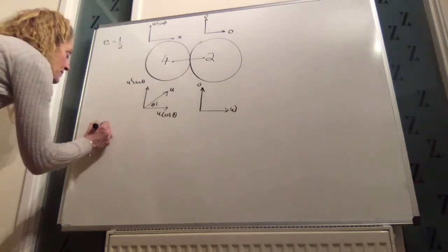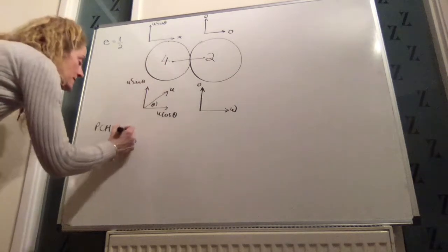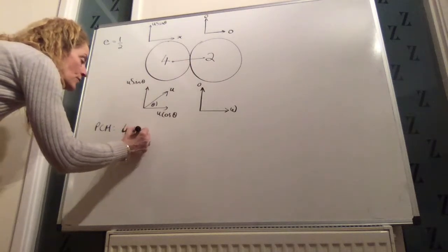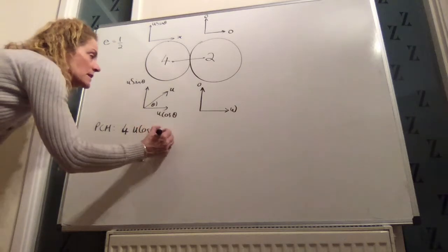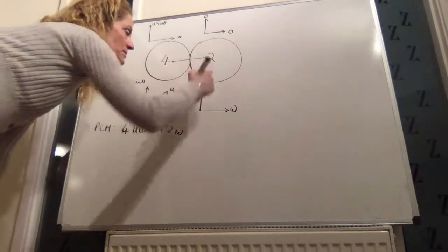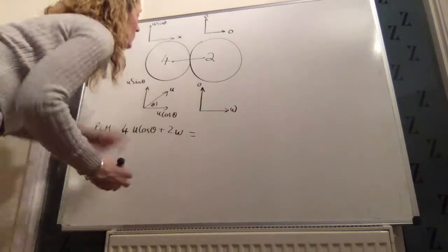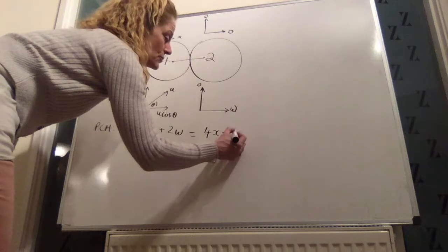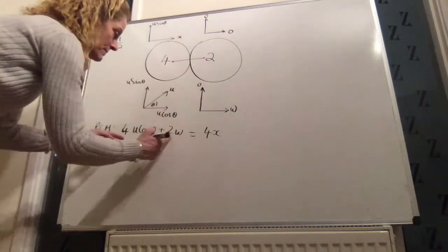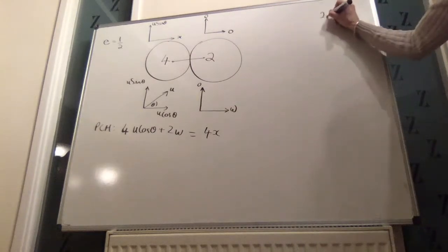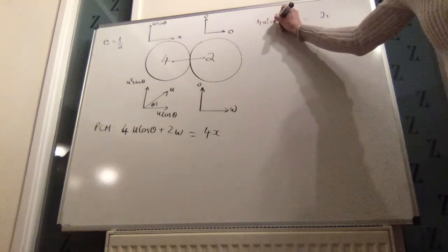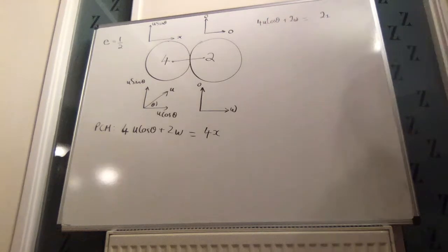All right, now, principle of conservation of momentum. 4 times u, remember it only applies to the direction parallel to the line of centres. 4u cosine theta plus 2w, mass times velocity plus mass times velocity, is equal to mass times velocity afterwards. 4 times x plus 2 times 0, which is just 0. Divide by 2 and we will get 2x is equal to 4u cosine theta plus 2w. That's one equation.